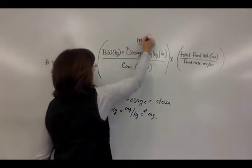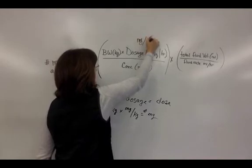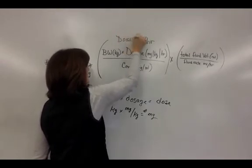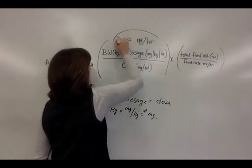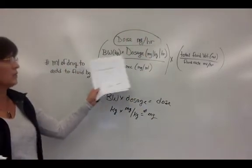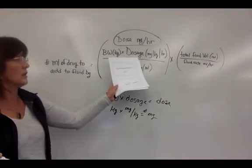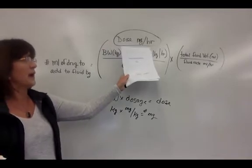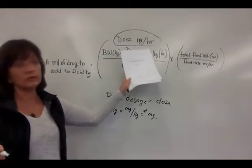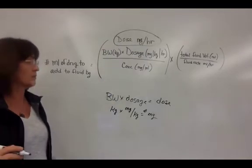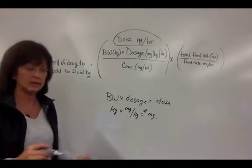That value in milligrams per hour is the dose for the constant rate infusion. So if you don't see body weight and dosage rate but you have something in mg/hour or milliequivalents per hour, that's your dose, and you'll use that in place of that part of the formula.